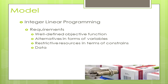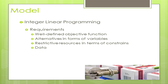Our model is an integrated linear programming model. The requirements were a well-defined objective function, decision variables, restrictive resources as constraints, and the data we obtained. The objective is to maximize revenue by producing the highest amount of products under the given constraints. The objective formula is the selling price of each product times the quantity produced — five different products with their selling prices and the excess amounts that can be manufactured and sold.